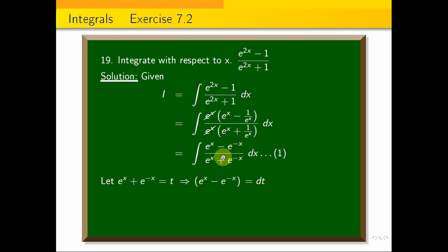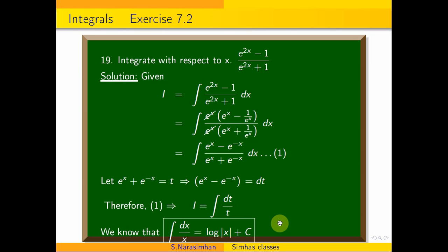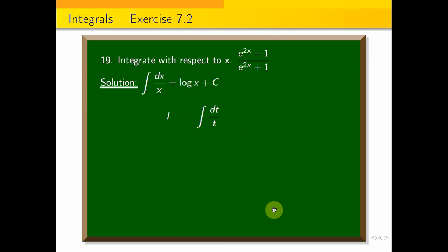So then therefore, the first equation will become I is equal to integral of the numerator will become dt and the denominator will become t. So this is of the form dx by x. We know that integral of dx by x is equal to log x plus c. So this is the formula.